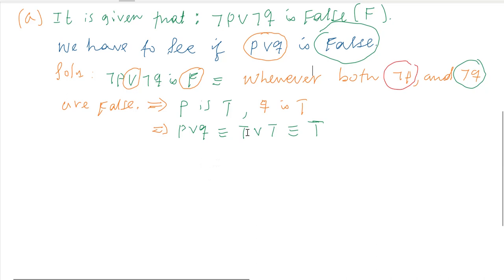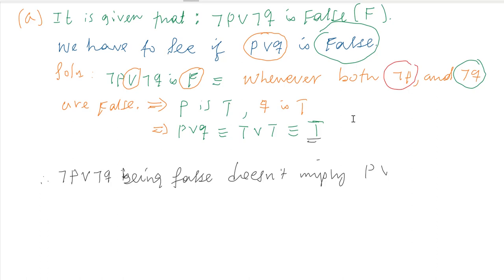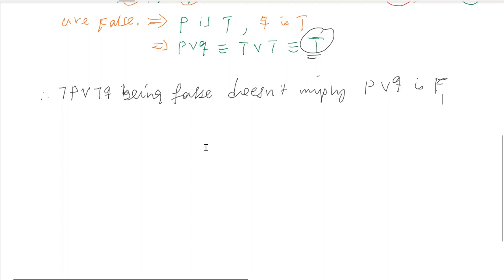Since we have obtained P or Q as true, we conclude that negation of P or negation of Q being false does NOT imply that P or Q is false — because we obtained true. So part A doesn't imply the required result.